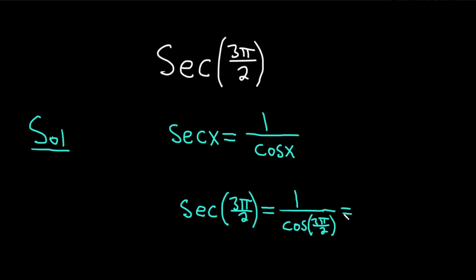So this is equal to 1 over, and the cosine of 3 pi over 2 is 0. So this doesn't work. This is undefined. You cannot have 0 in the denominator. So the secant of 3 pi over 2 is undefined.